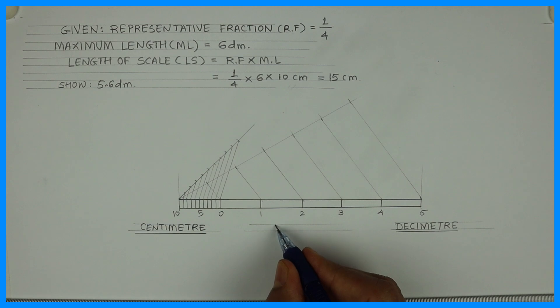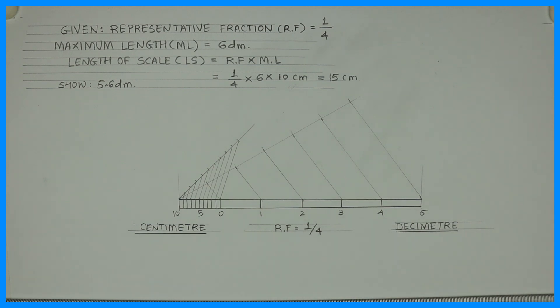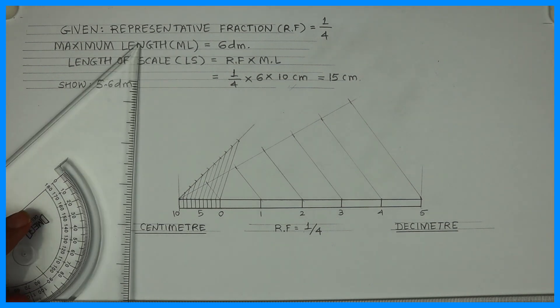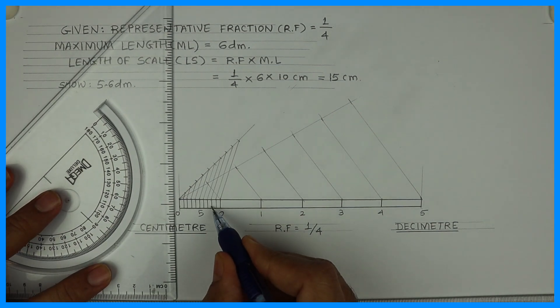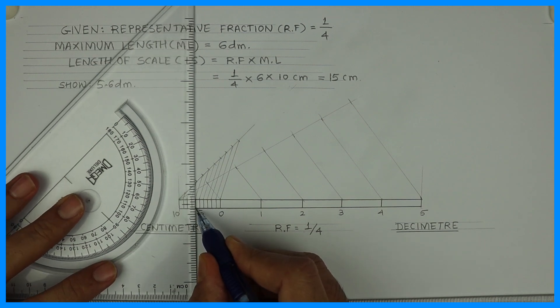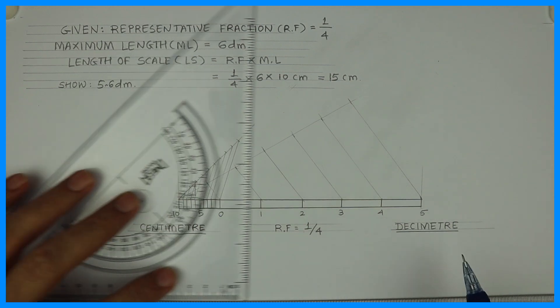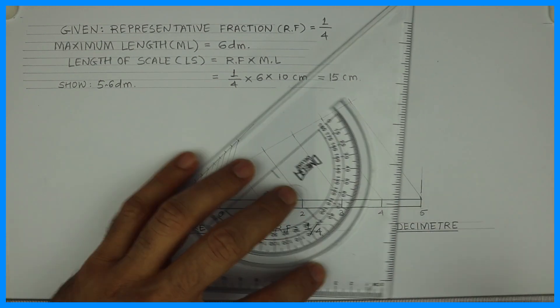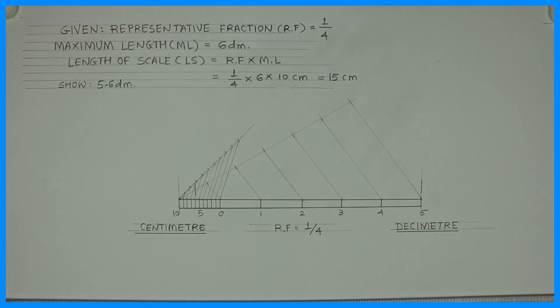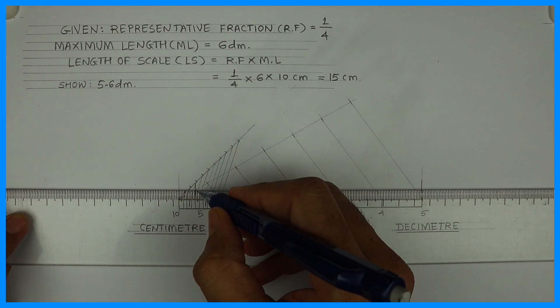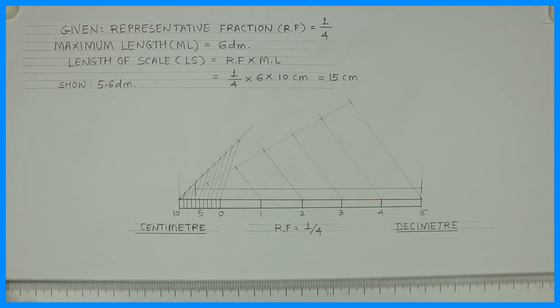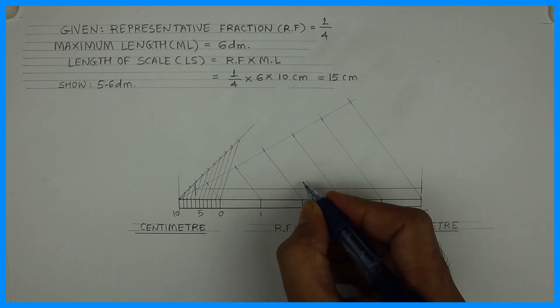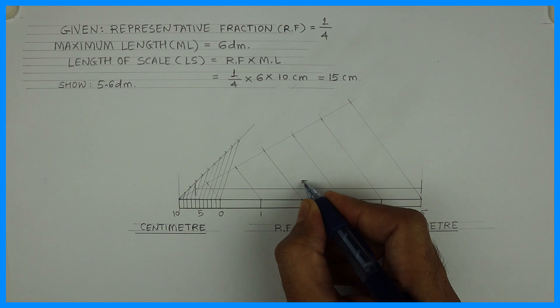Now you can write 0, 5 and 10. This is RF which is 1 upon 4 so you need to write this much. Now we need to show 5.6 decimeter so for that we take 5 from the right side 0 to 5 and 6 from the left side 1 centimeter see 1, 2, 3, 4, 5, 6. So you can draw line up or down wherever you want I am drawing it up. So you got 5.6 decimeter.